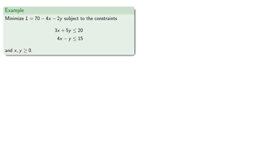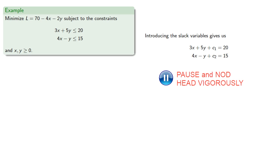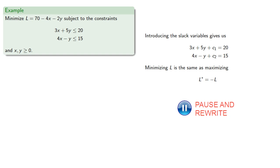So if we want to minimize some objective function subject to the constraints and the positivity requirements, we'll introduce our slack variables. Now minimizing L is the same as maximizing the negative of L, and so we can rewrite our objective function as an equation in standard form, which gives us our initial tableau.